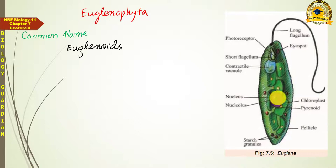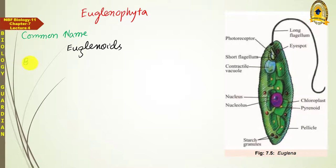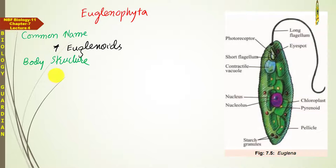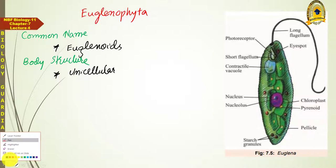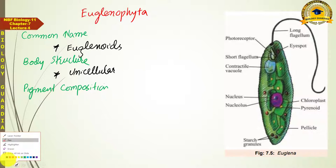As far as the body structure of Euglenoids is concerned, they are all unicellular. Regarding their pigment composition, they have Chlorophyll A as well as Chlorophyll B — making them one of the groups whose pigment composition resembles true plants. In addition to Chlorophyll A and B, they also have carotene.